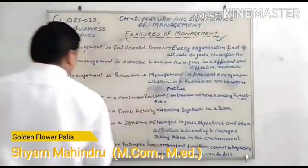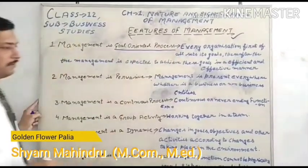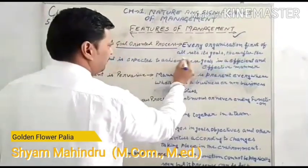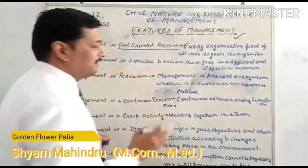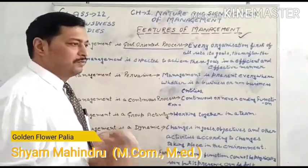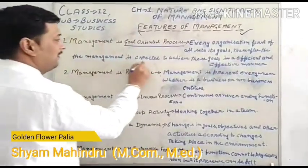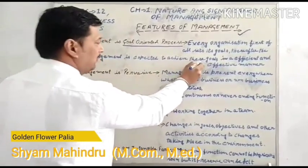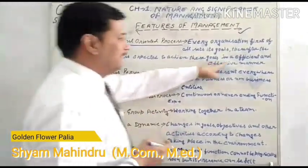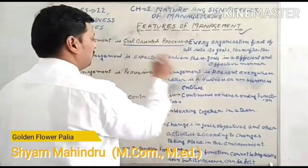The first feature is: management is a goal-oriented process. Every organization first sets its goal. Each and every organization needs to maintain a goal — which goal they want to achieve — and thereafter the management is expected to achieve this goal in an efficient and effective manner.